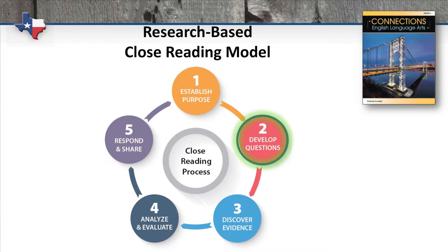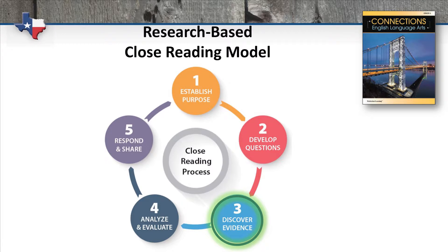Then we develop questions. From the objective, we develop both student and teacher-led text-based questions to determine what sorts of literary elements we are reading for in the piece. Next, we gather evidence: we read the text and use critical thinking to identify the textual evidence that relates to our objective and questions.